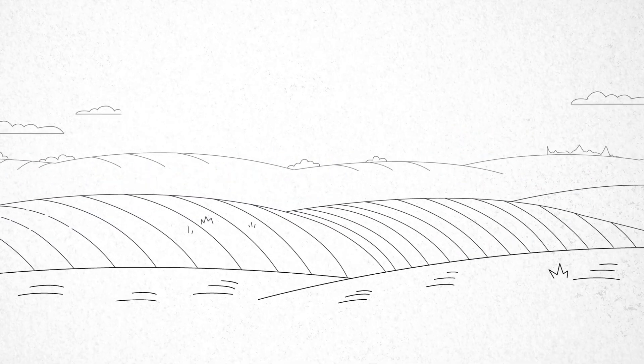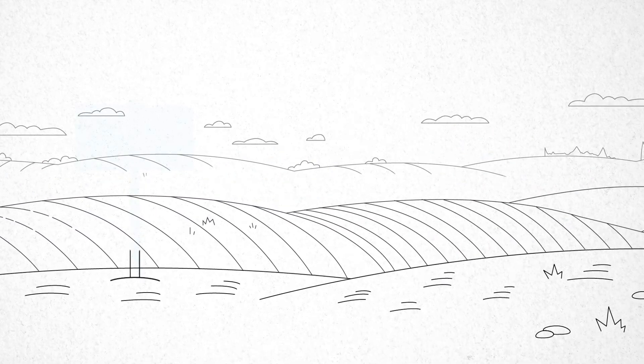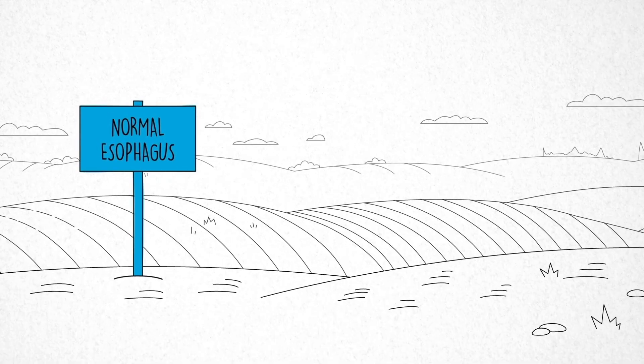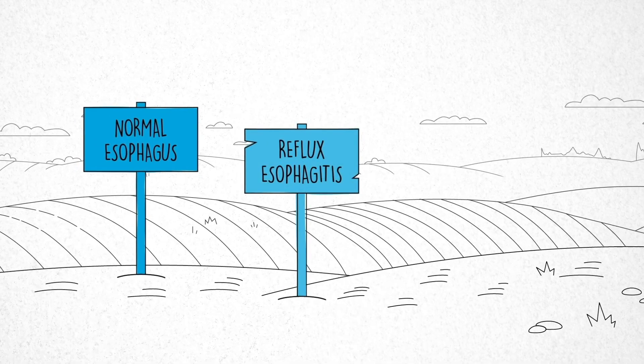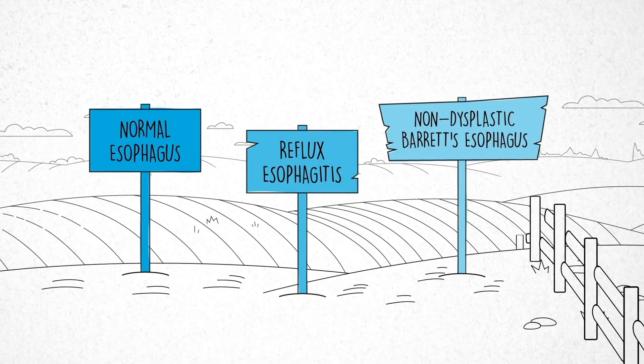I start by asking them to imagine a field where on the left side you have a normal esophagus, reflux esophagitis, non-dysplastic Barrett's esophagus, and then a fence.